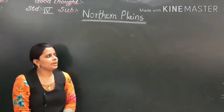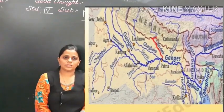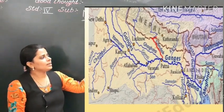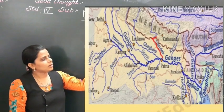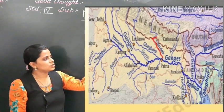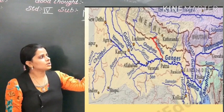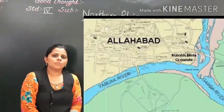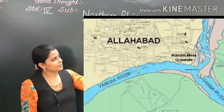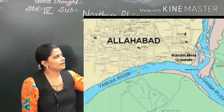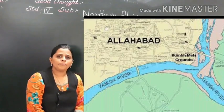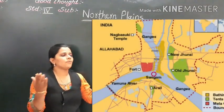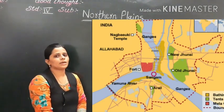As it flows, it is joined by many rivers and its tributaries — Gandak, Ghaghra in the north, and Chambal, Son in the south. The Yamuna is the longest tributary of the river Ganga and meets it at Allahabad. Their meeting point is known as Sangam.